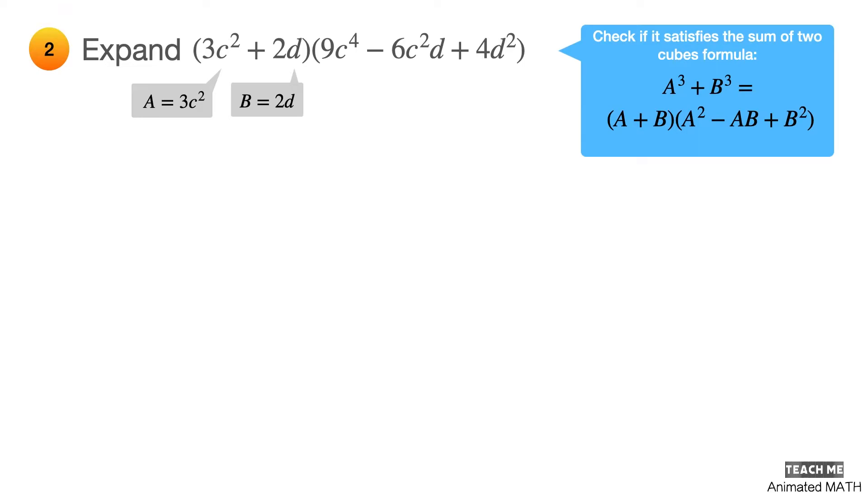Using these values for computation, a squared is equal to 9c raised to 4, ab is equal to 6c squared d, and b squared is equal to 4d squared. Alright! The expression follows the sum of two cubes formula.